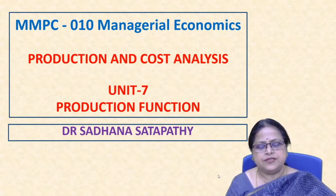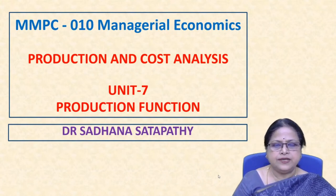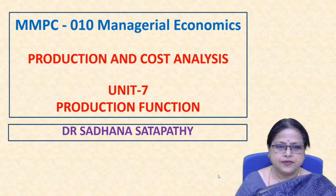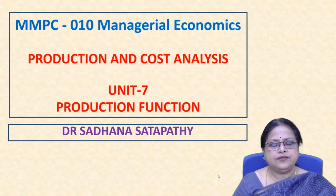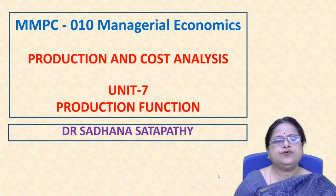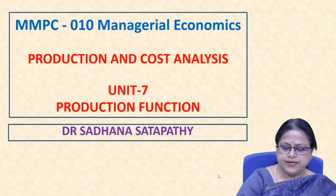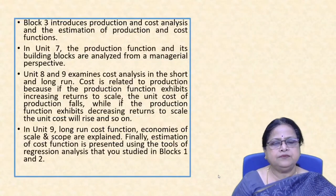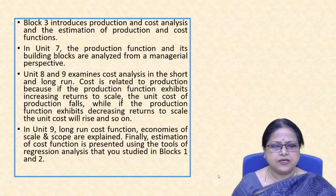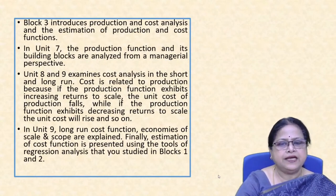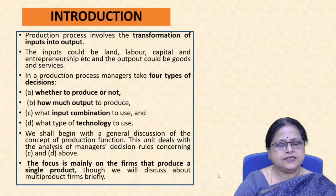This is Unit 7, which is under Part 3. Here we are going to discuss the production function in Unit 7, cost functions in Unit 8, and long run cost functions in Unit 9. Block 3 introduces production and cost: Unit 7 covers the production function and its building blocks, while Units 8 and 9 cover cost analysis and long run cost functions.